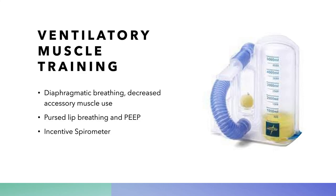PTs can train ventilatory muscles. Part of that is instructing in diaphragmatic breathing — breathe in through your nose, make sure your belly is expanding, don't raise your shoulders, don't use accessory muscles. You can also instruct someone in pursed lip breathing, which increases positive end-expiratory pressure or PEEP, causing the alveoli to inflate and become functional again — very useful. You can use an incentive spirometer to work on increasing inspiration and expiration volumes as well.